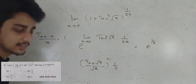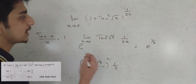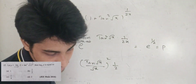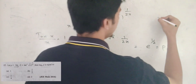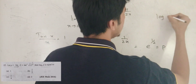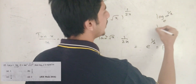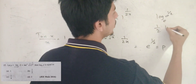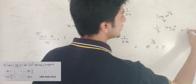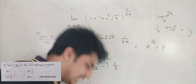This limit is e to the power 1 by 2. We are taking log of this. Log of e to the power 1 by 2, base e. By the power rule, this is 1 by 2 times log e base e. Log e base e equals 1, so the answer is 1 by 2.